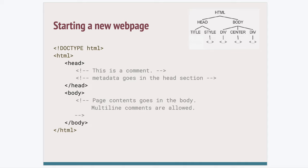The head subtree is where you add metadata and information about the page that you may not want the user to see within the browser window but is relevant to cataloging the page. Search engine bots might use information there to figure out the relevance of your page. That's also where you can have information about linking to stylesheets, JavaScript files, a favicon, the title, and other metadata.